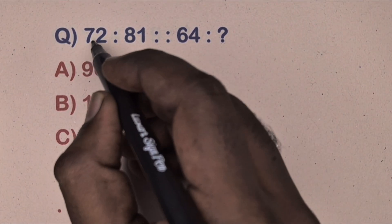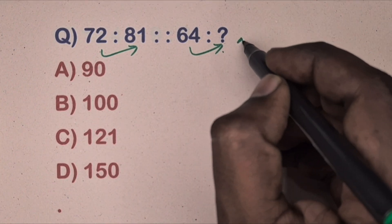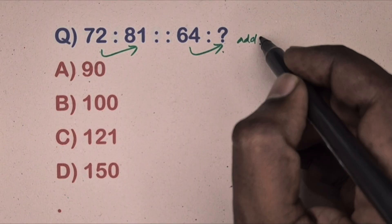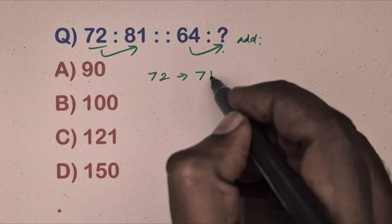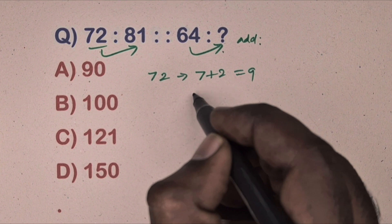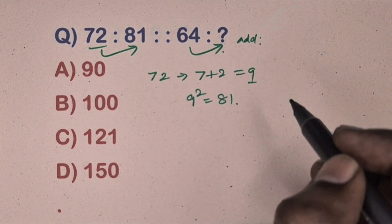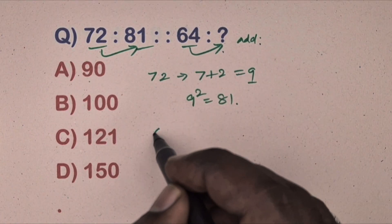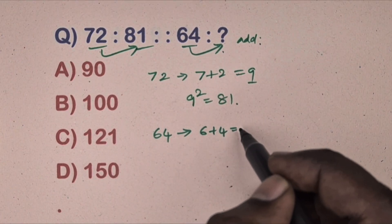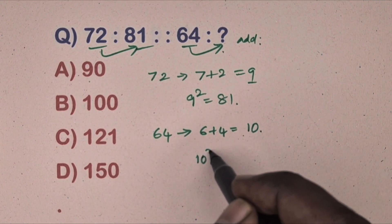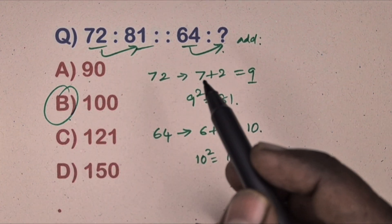Next question: 72 is related to 81, 64 is related to which number. This is the addition method. Take 72, add digits to get nine, then nine squared equals 81. Same way, take 64, add digits to get ten, then ten squared equals 100. Option B is the correct answer.